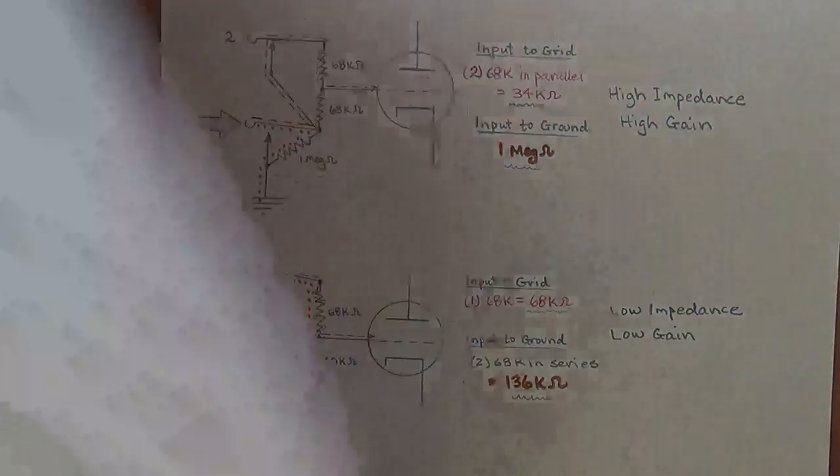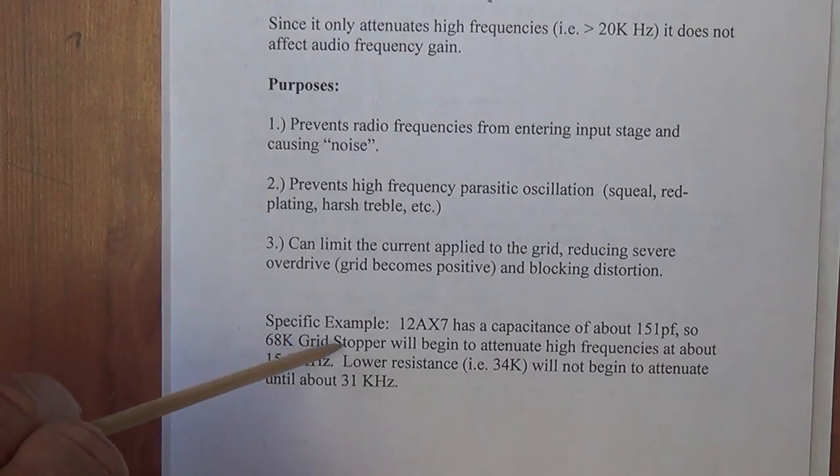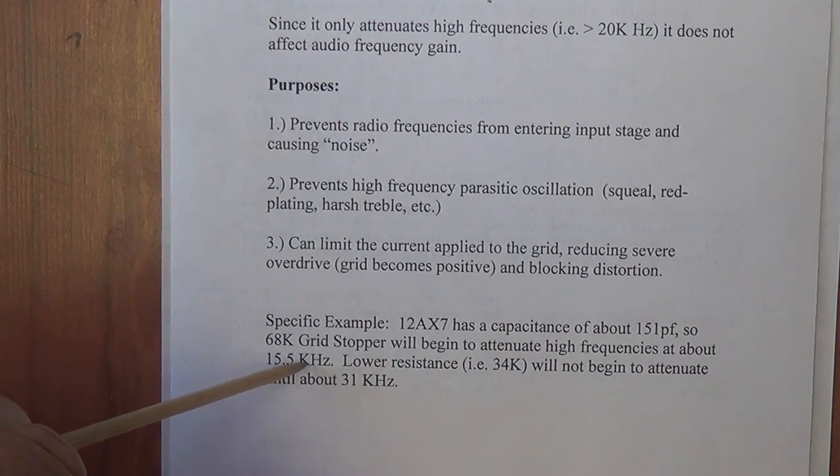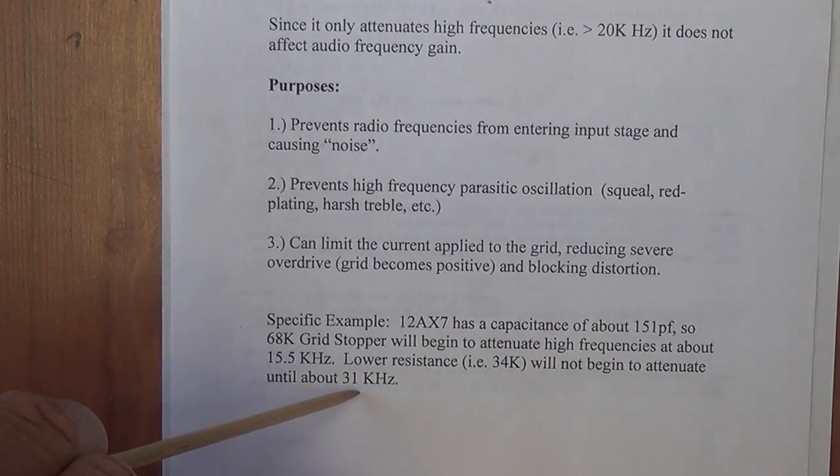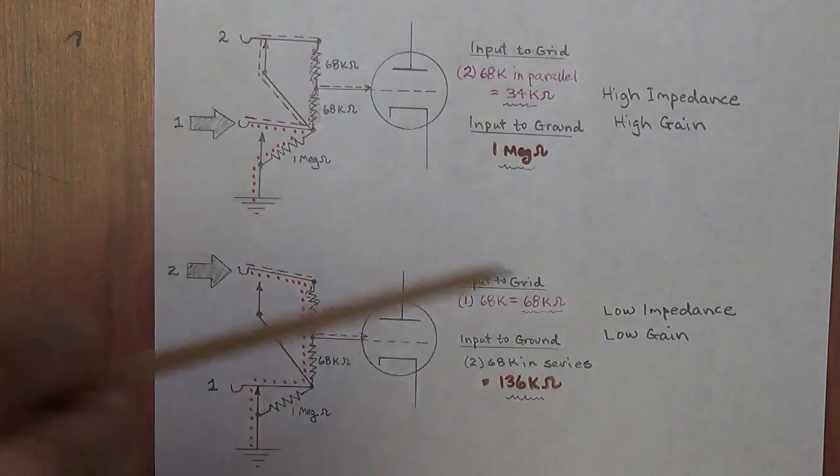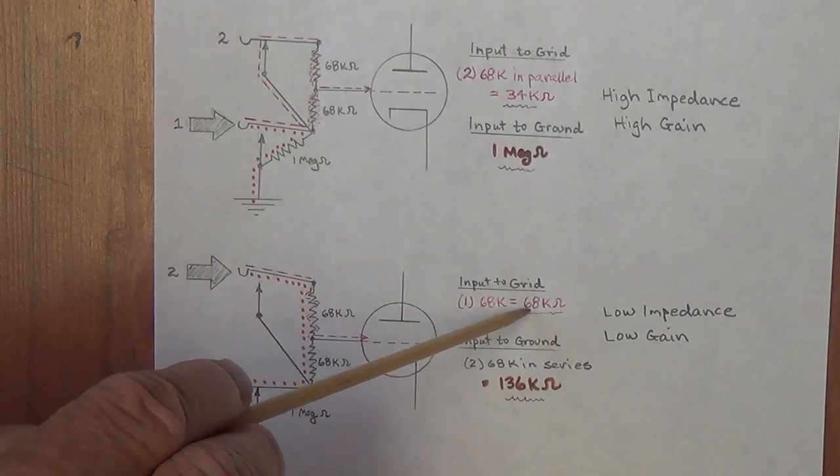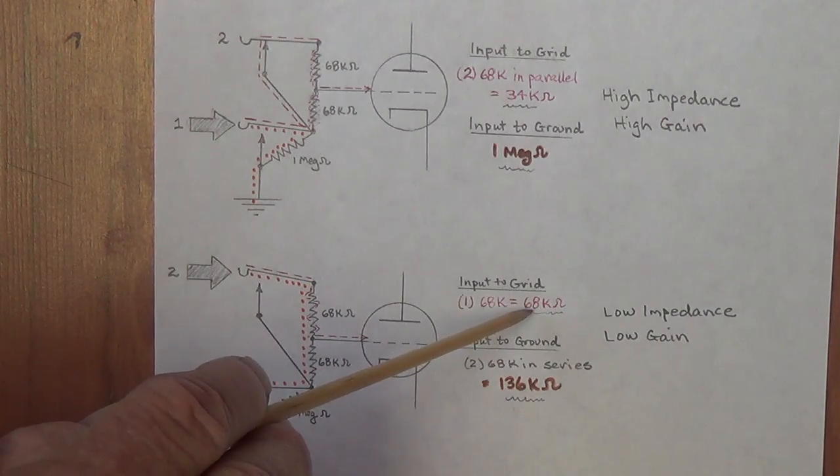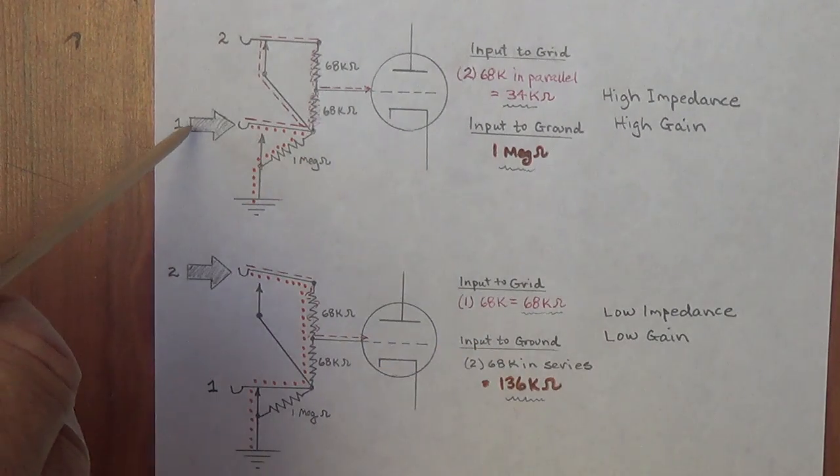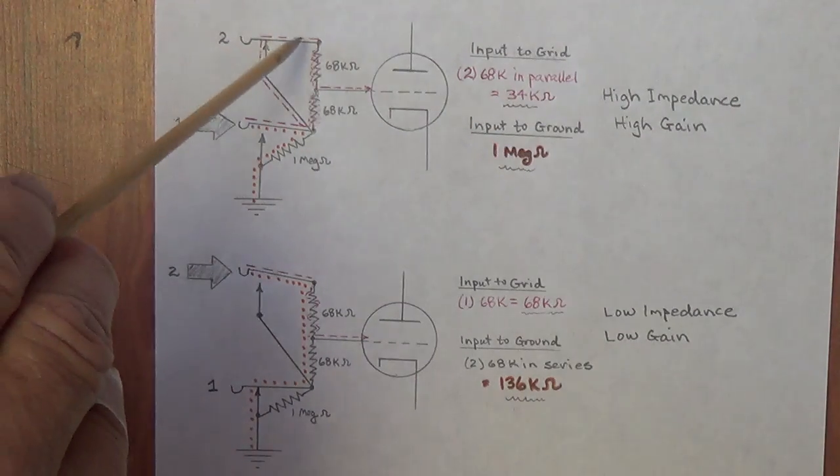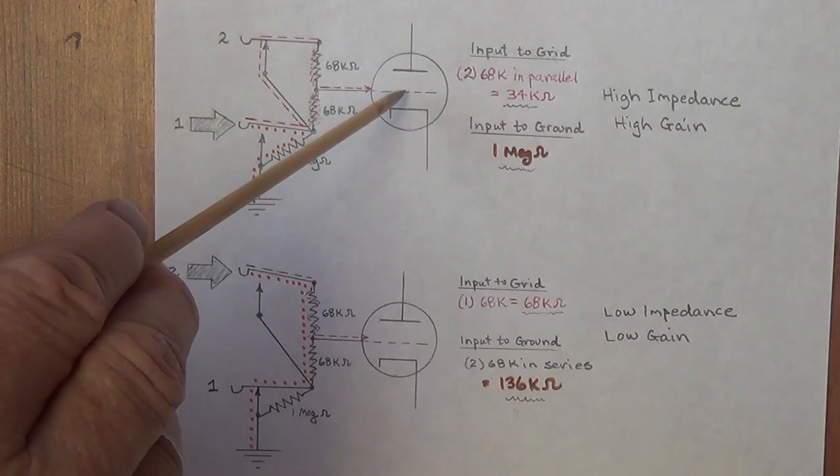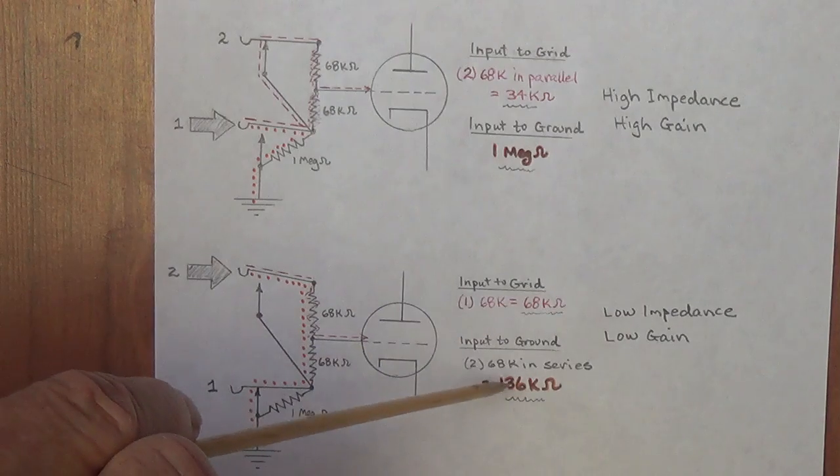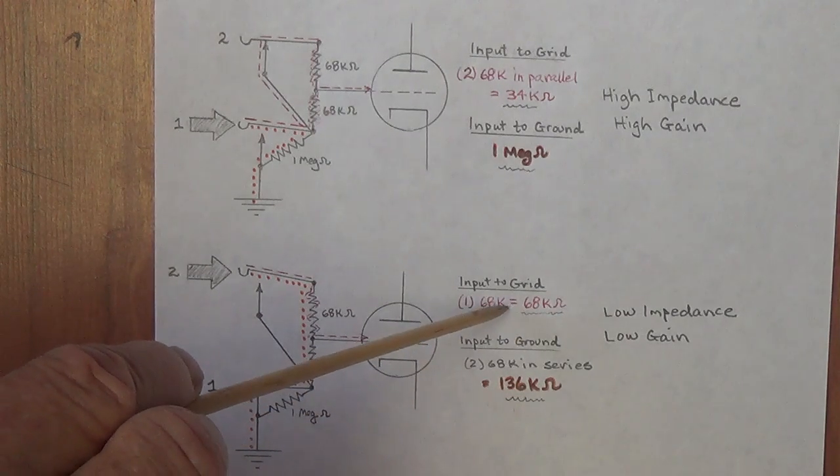Now, the second difference is a little more subtle. Remember, we saw that when our grid stopper resistance was at 68k, we will start to attenuate at 15.5 kilohertz. However, at 34k, we won't attenuate into 31 kilohertz. That means, then, that with our low impedance input, which has the 68k grid stopper or input to grid resistance, we're going to attenuate above 15.5 thousand cycles per second. When we plug into jack number one, we're at 34k resistance between input and grid because of the two 68s in parallel, and therefore, we will not attenuate until over 30,000 cycles per second. So, here we're going to lose a bunch of our signal to ground, and we're going to lose some of our high frequency.